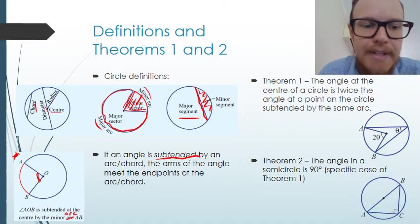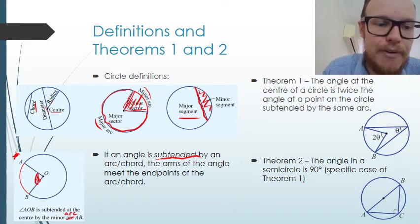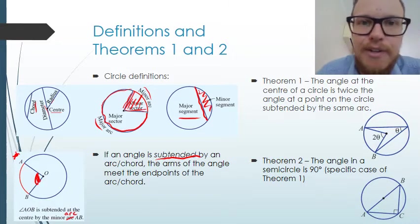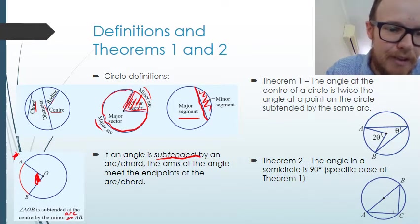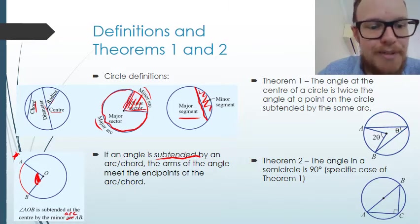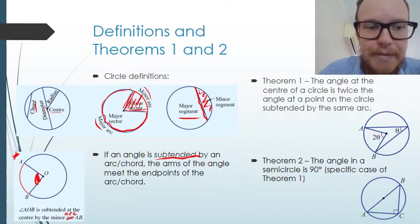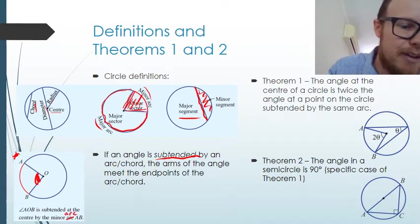If we had a chord we'd be doing the same thing, but it would just be drawn straight across. So we'd say angle AOB is subtended at the centre by the minor chord AB, if we were looking at a chord rather than an arc.